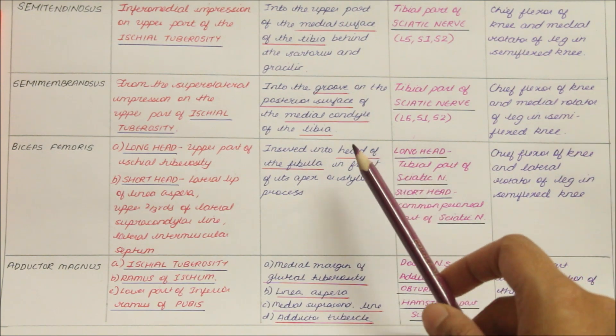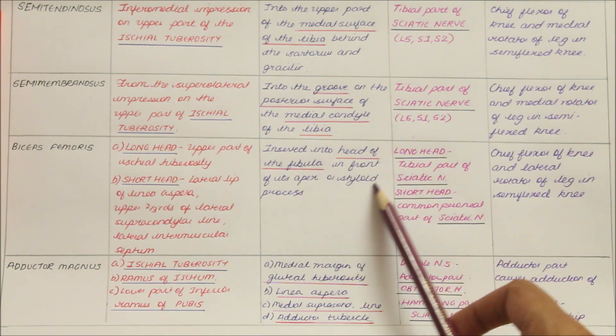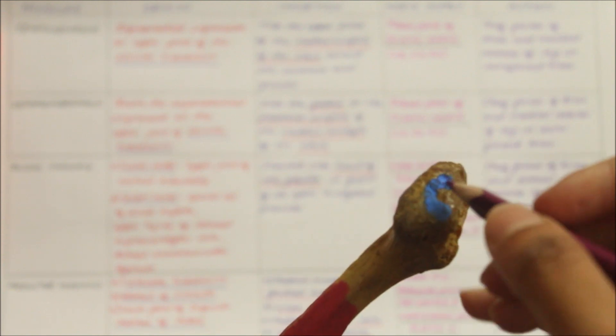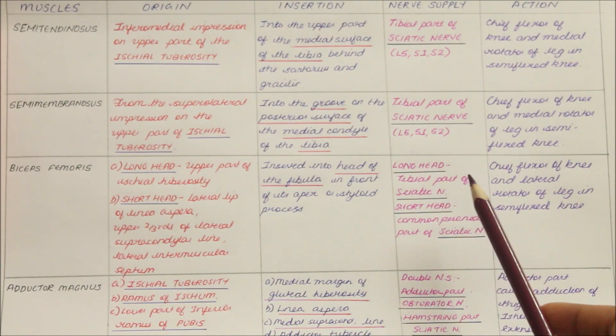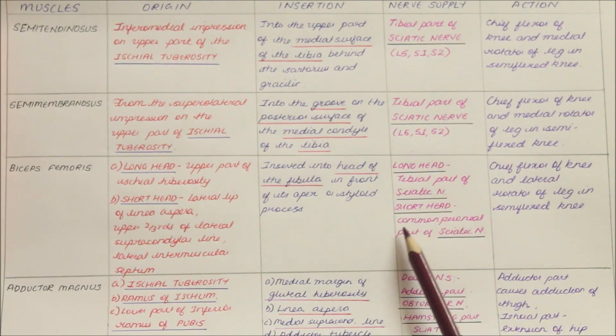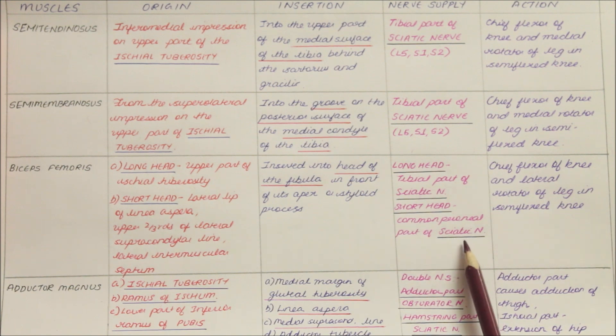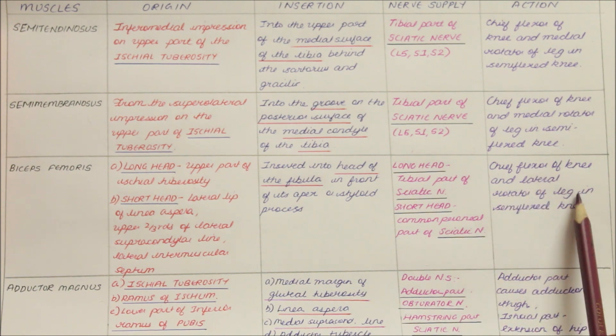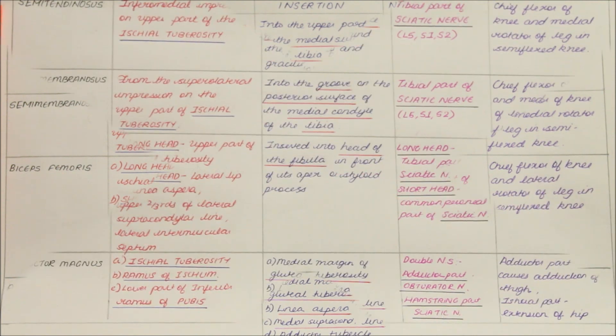The biceps femoris inserts into the head of the fibula in front of its apex or styloid process. This is the right fibula and this is its apex — the insertion is right here. The long head is supplied by the tibial part of the sciatic nerve, while the short head is supplied by the common peroneal part of the sciatic nerve. Its action is that it is a chief flexor of the knee and lateral rotator of the leg in the semiflexed position.